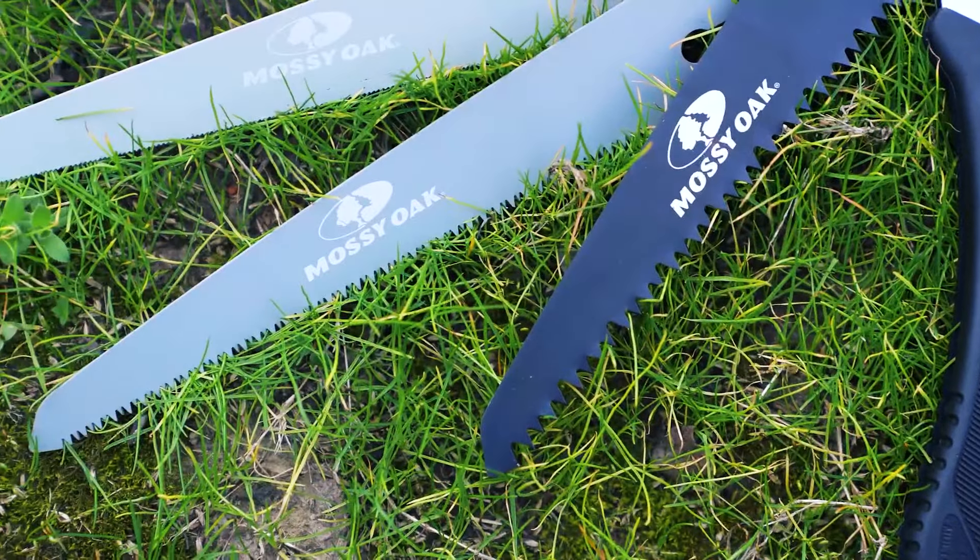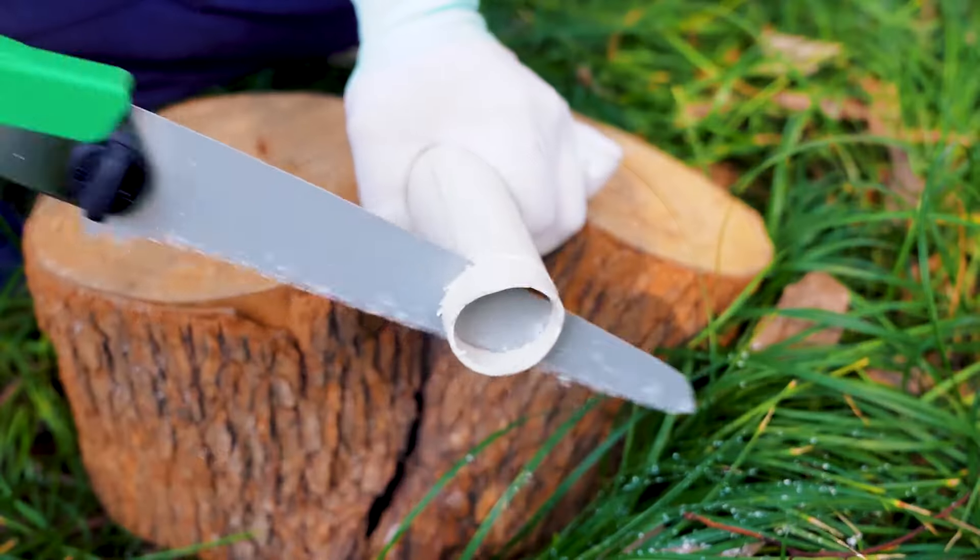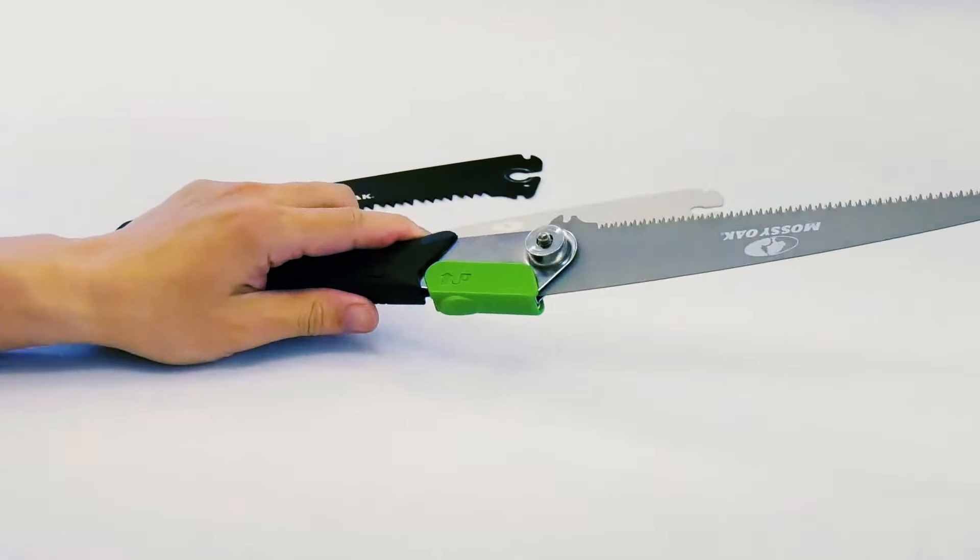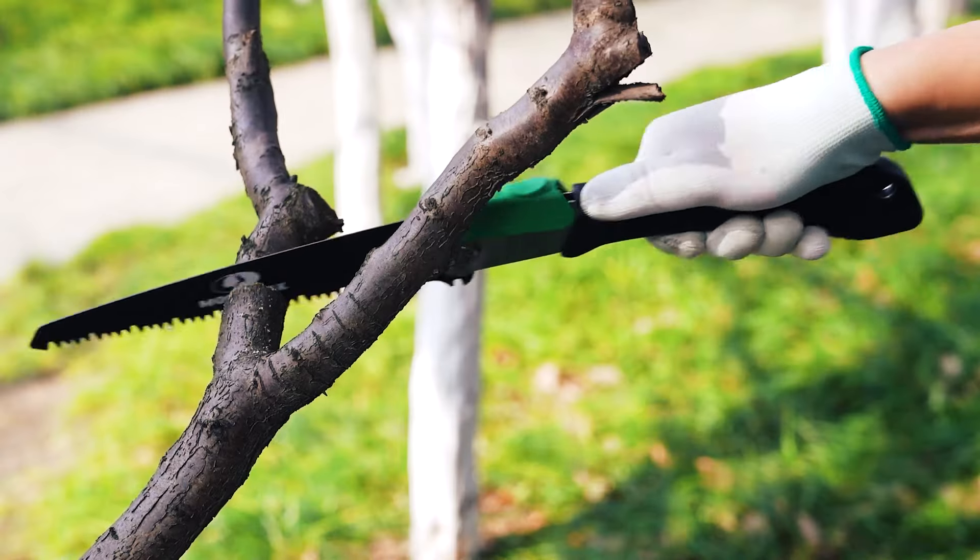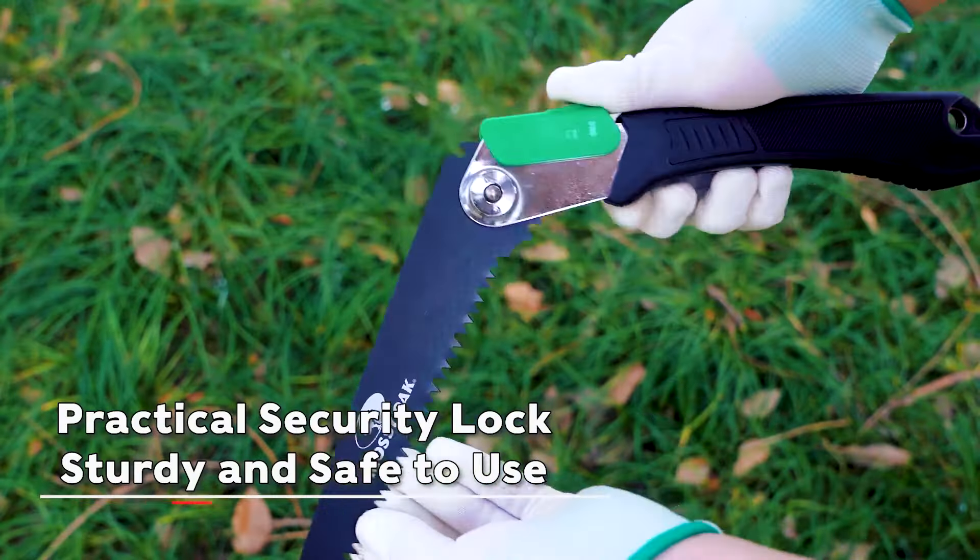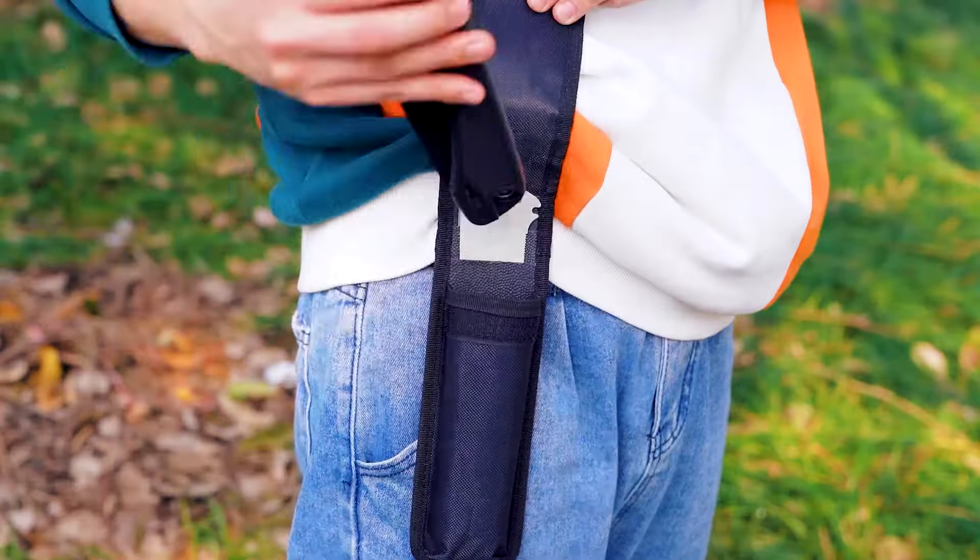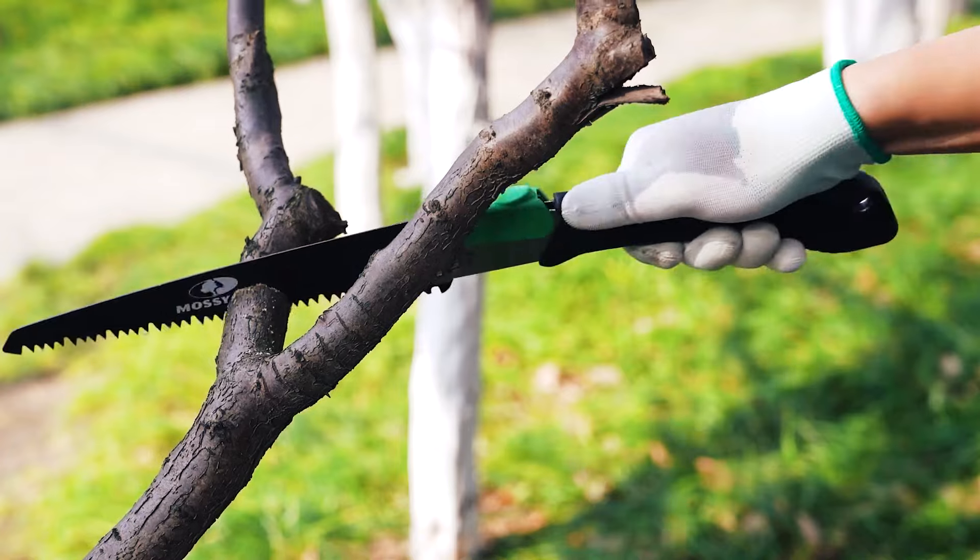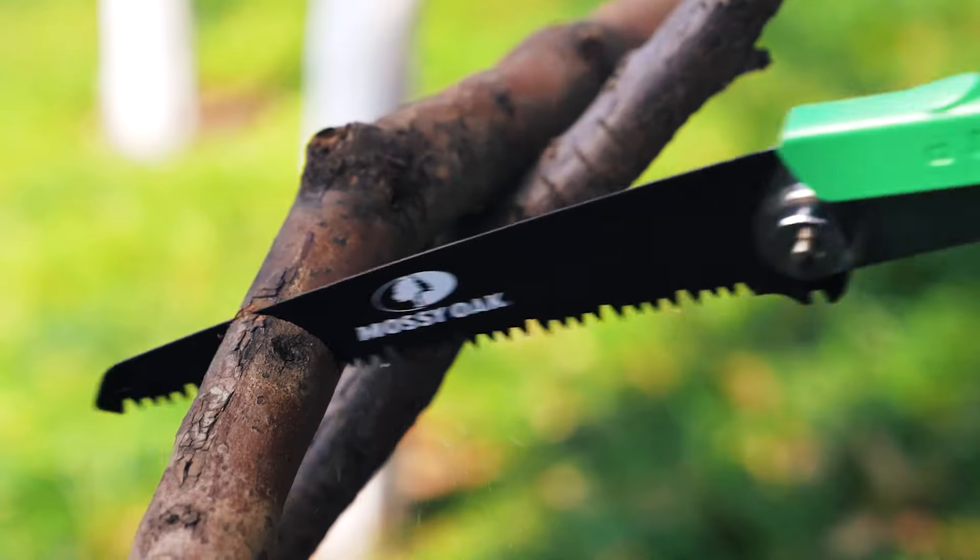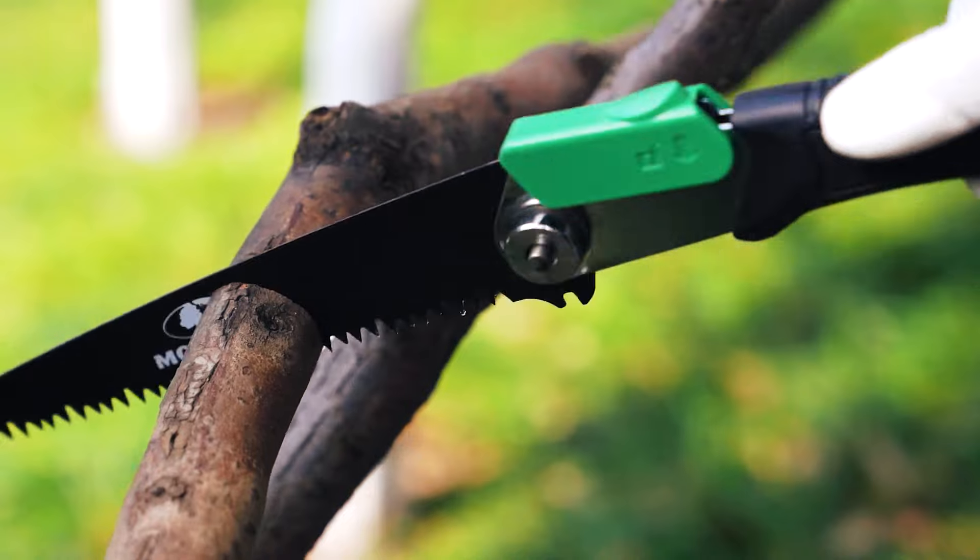The three multi-purpose blades offer specialized cutting for pruning, hardwood, or plastic and metal. The soft yet solid handle ensures a comfortable grip, while the secure lock prevents accidental closure during use. With a bonus nylon pouch for convenient storage and carrying, this folding saw is an essential companion for those who appreciate practicality and durability in the great outdoors.